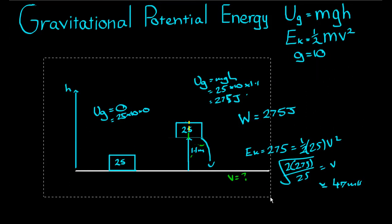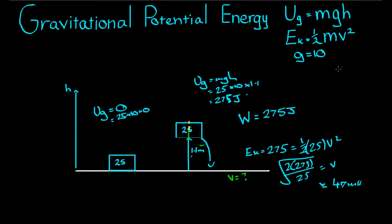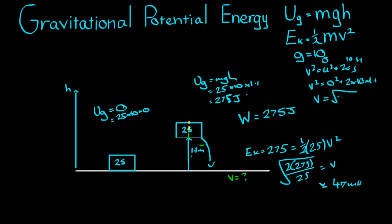Let's verify these results using our motion formulae. We have v² = u² + 2as = 0 + 2 × 10 × 1.1. So v = √(2 × 10 × 1.1) = √22 ≈ 4.7 meters per second. Either way we solve this, we get the same landing velocity.